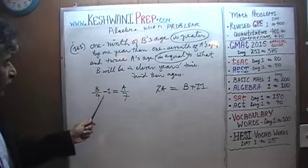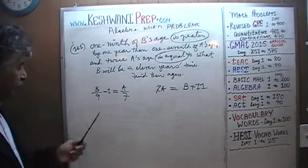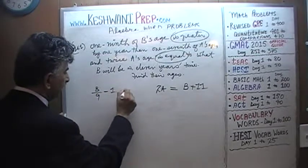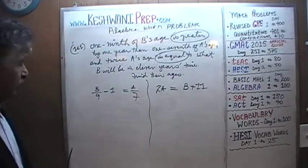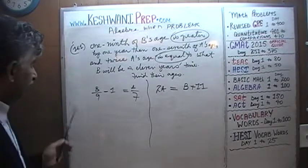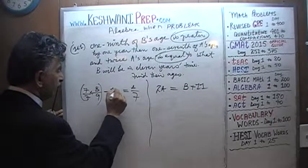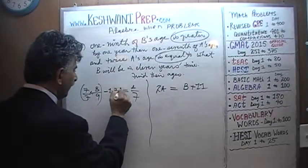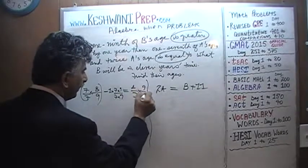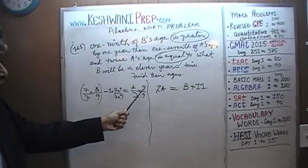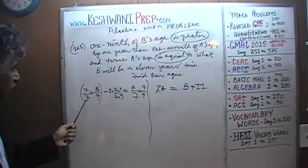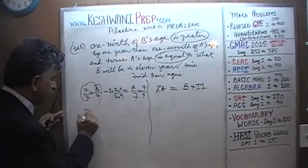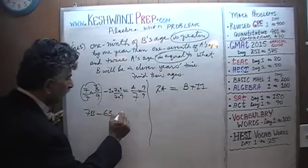Let's get rid of the denominators 9 and 7. The common denominator is 63. Multiplying through by 63: B over 9 becomes 7B, the 1 becomes 63, and A over 7 becomes 9A. So we get 7B minus 63 equals 9A.